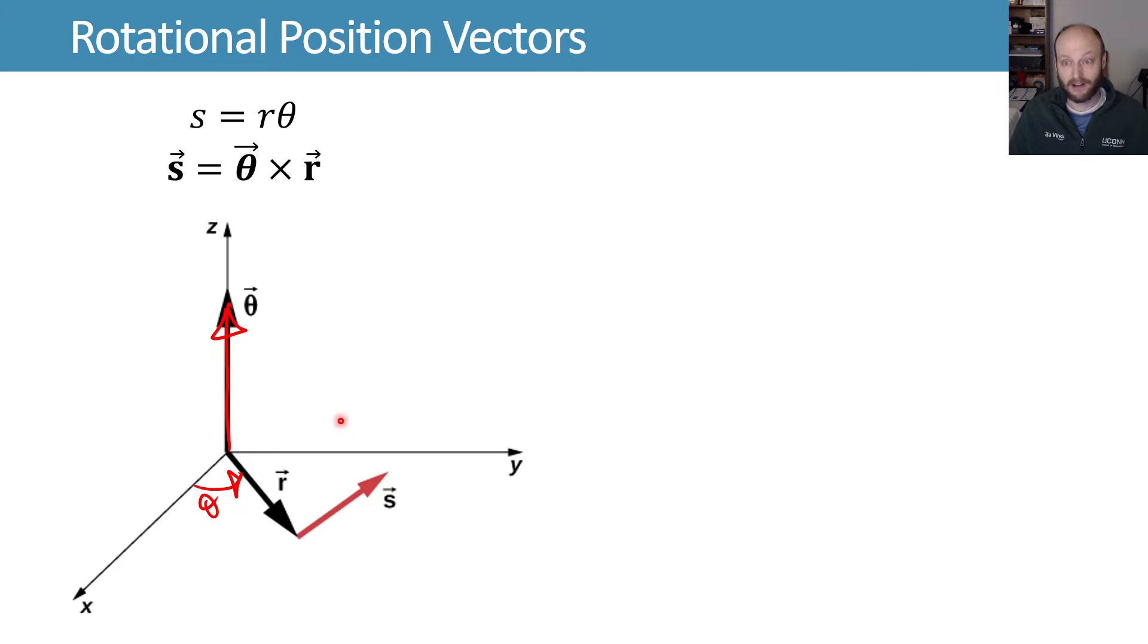This direction is based on an arbitrary choice of what up or down means. So we could have chosen the other way. We've chosen this way. We're going to stick with this way because it's a right-handed coordinate system. And we get our direction here from that right-hand rule.